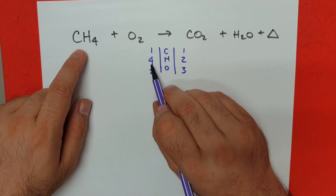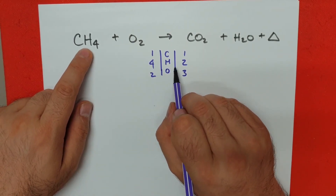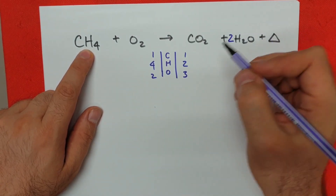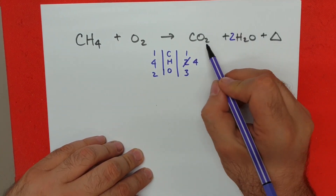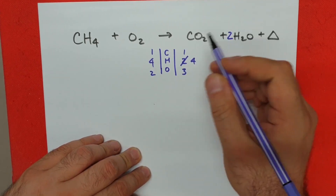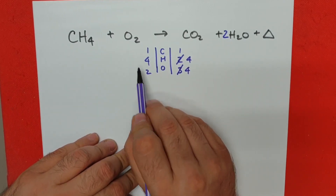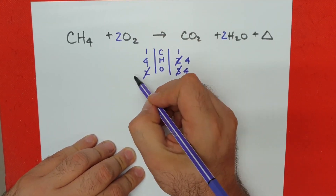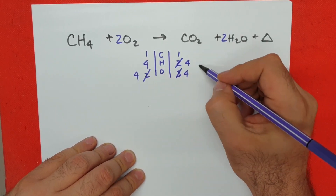Hydrogen is not balanced — we have four here and two on the other side, so let's add a two. Once I add a two, my hydrogen becomes four. Now let's see how the oxygen count changes: we have two oxygen here, and then two from this coefficient changes that to four. My final step is to balance the oxygen — we have two oxygen atoms here, and once I add a two we have four. We have our matching numbers one, four, four on each side. This is balanced.